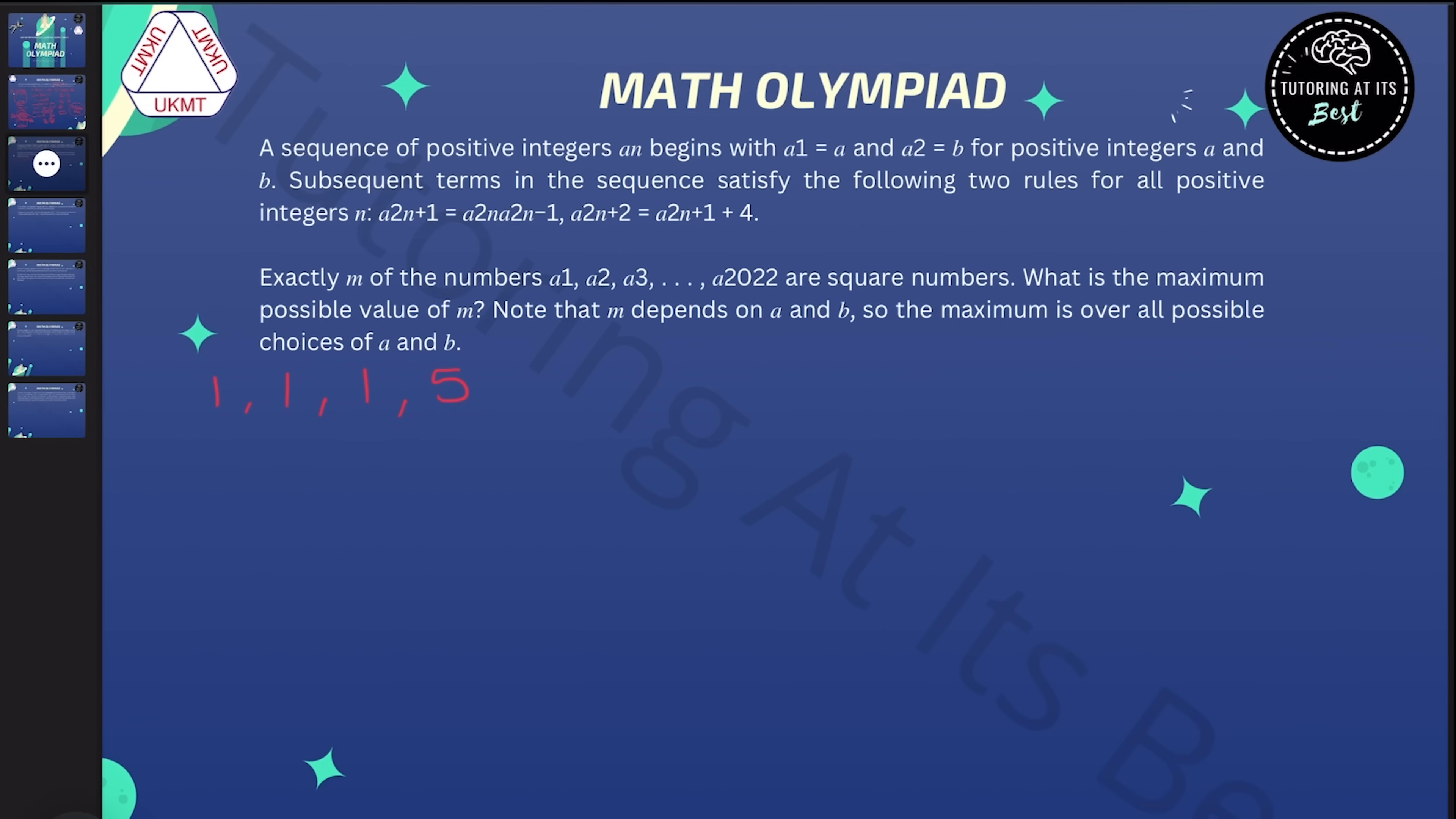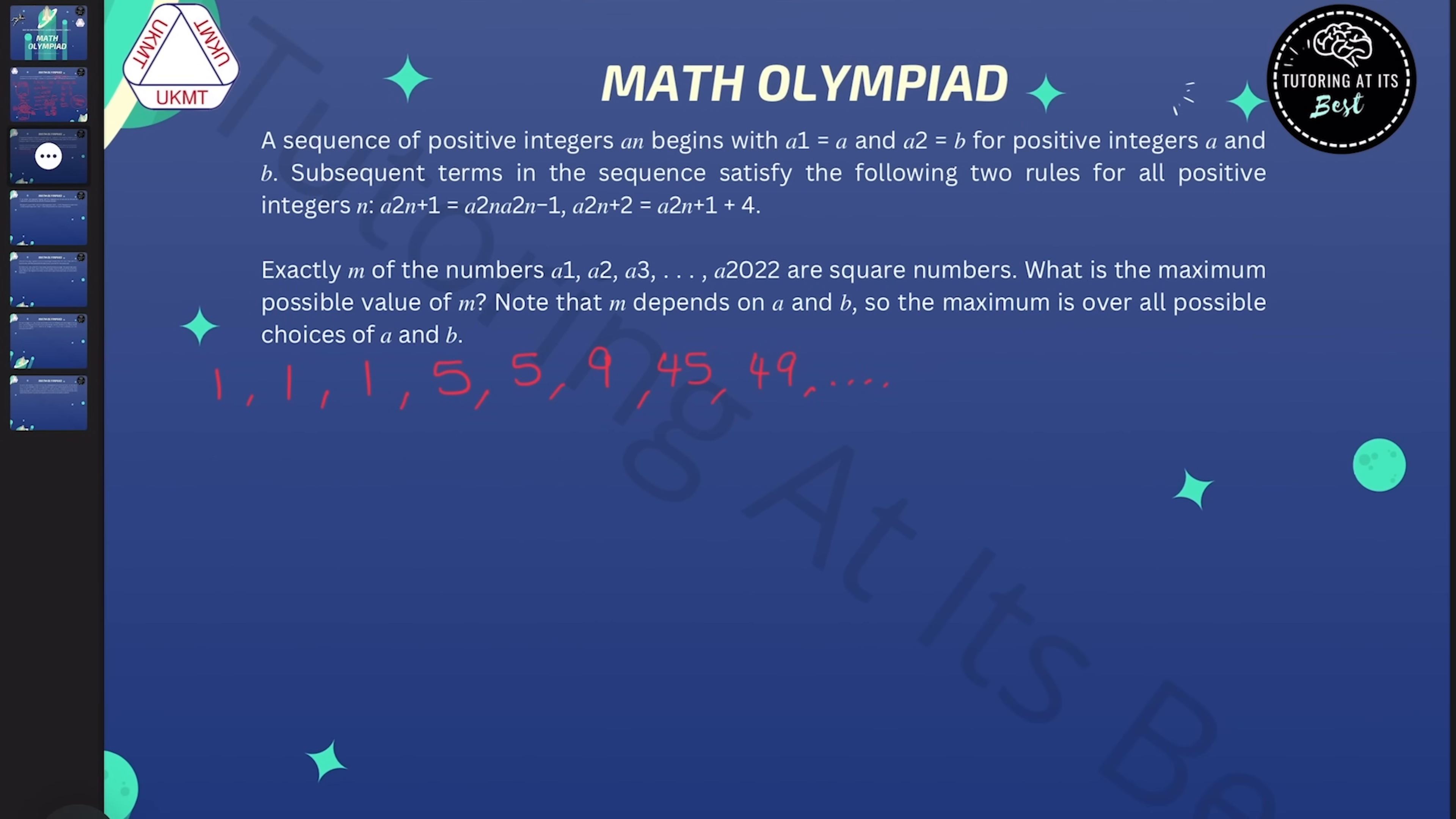So next, we multiply the two previous terms. 1 times 5 is 5, and we add 4 to get 9, and we multiply 5 and 9 to get 45, and then we add 4 to 45 to get 49. Now, I really don't want to multiply 45 and 49, so for now I'll just put a dot dot dot, and we can think about it if I have to later.